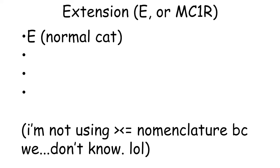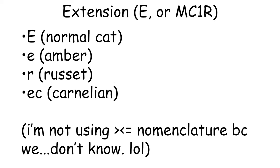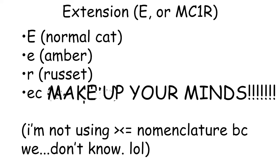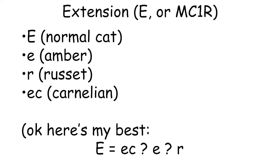Capital E, which is a normal cat, little e, which expresses the amber phenotype, little r, which expresses the russet phenotype, and the recently discovered little EC, which expresses the carnelian phenotype, also known as copal, also known as sardolic, also known as a lot more things because it's so new breeders and geneticists are just calling it any fun word they can think of. Capital E, normal coloration, appears to be completely dominant over amber and russet. While we think carnelian might be incomplete dominant with normal coloration, more on that later.